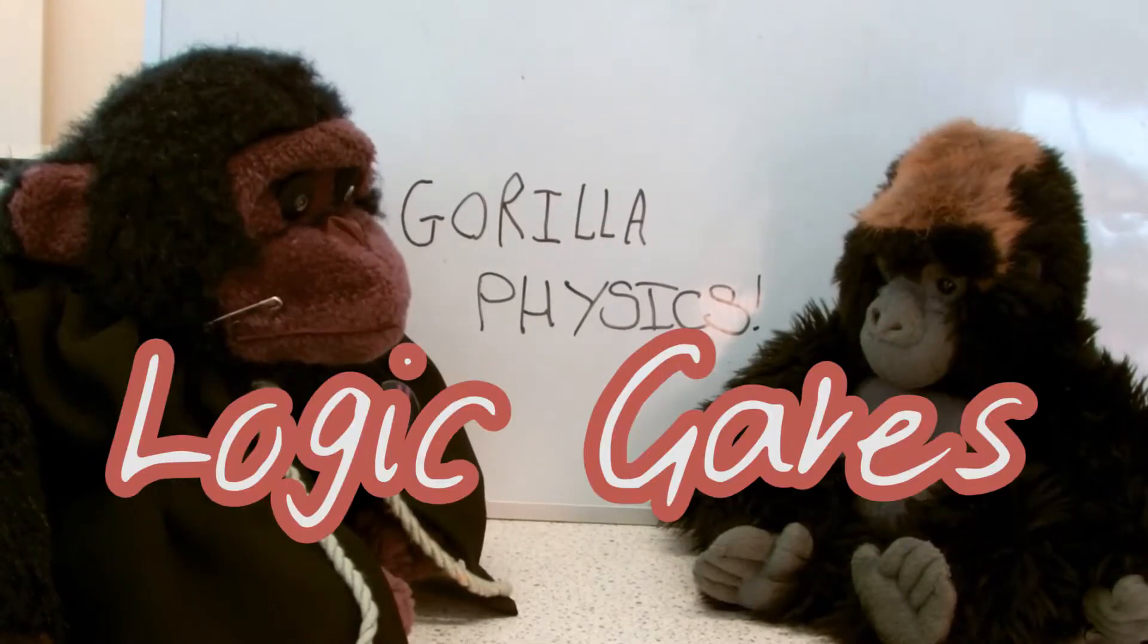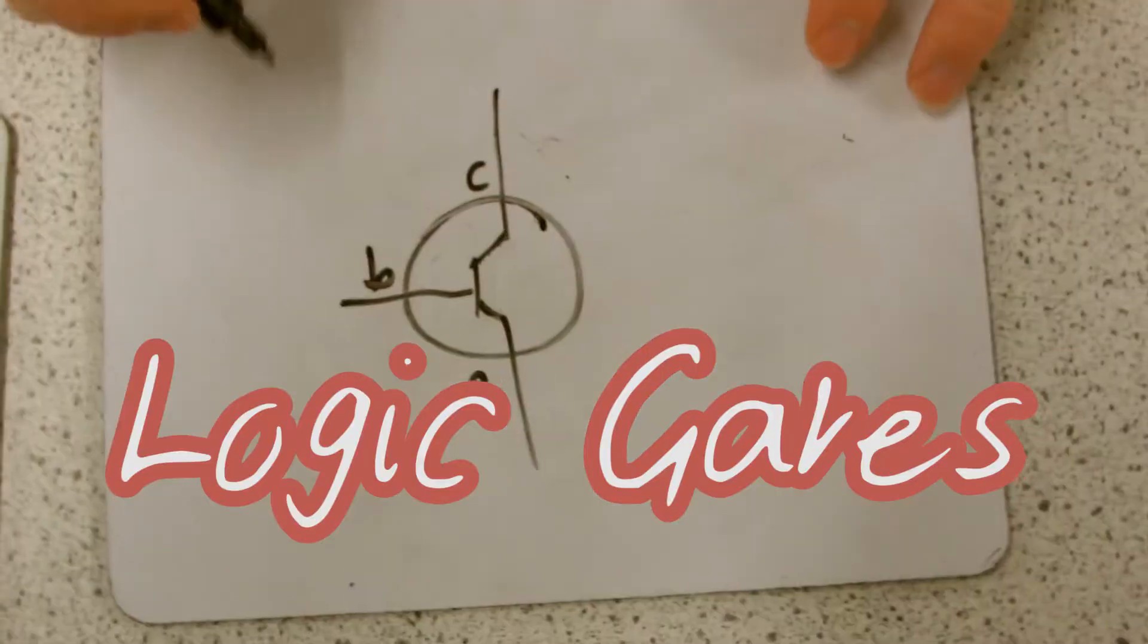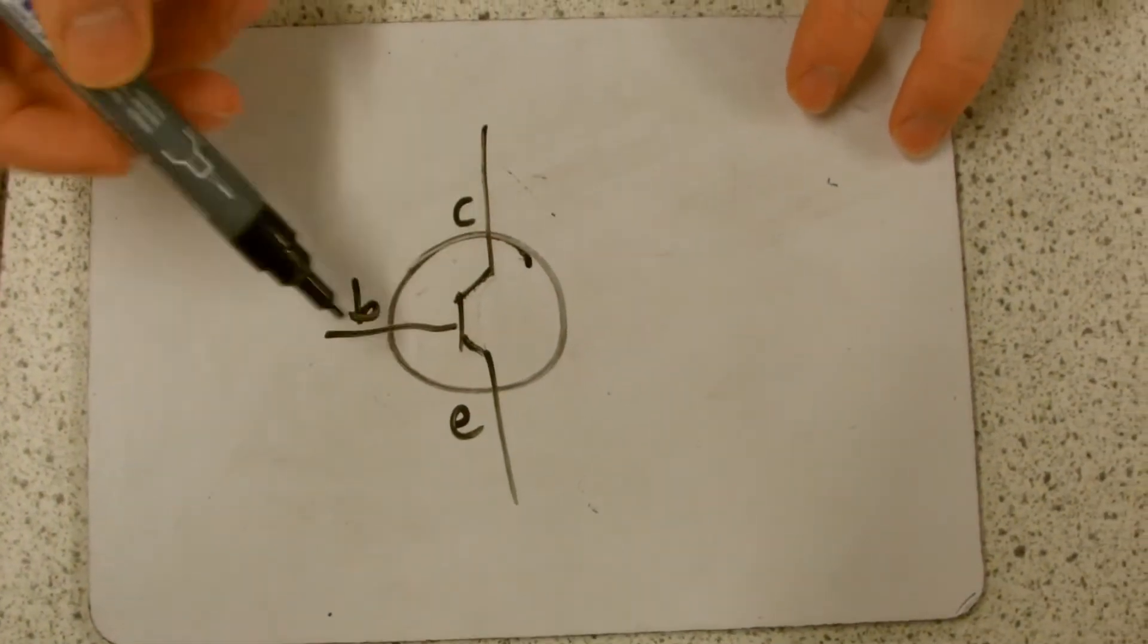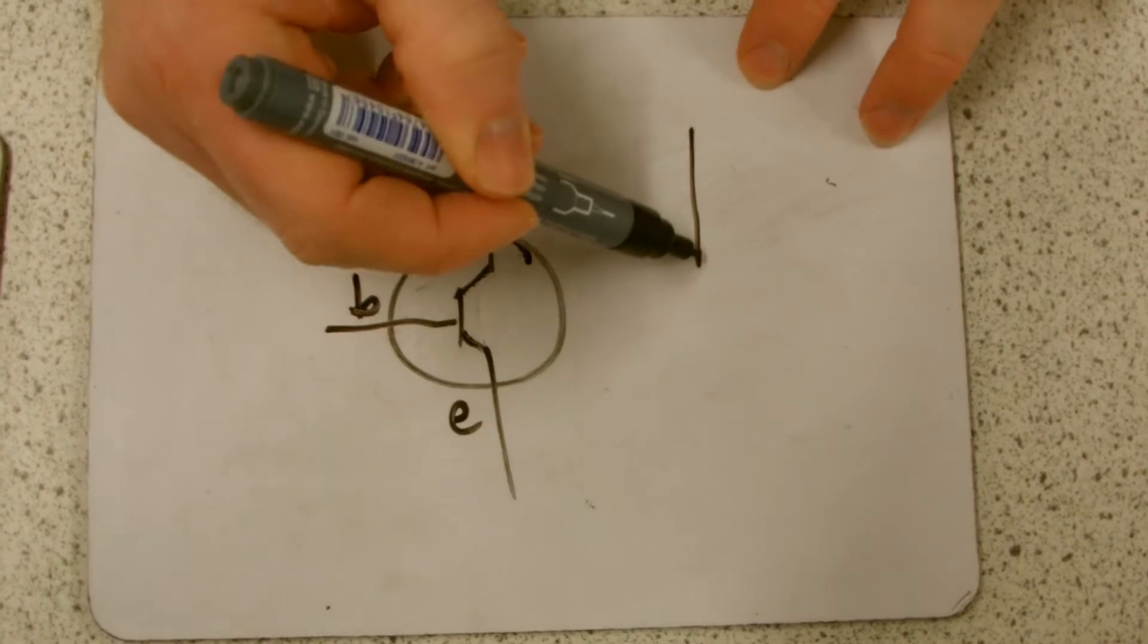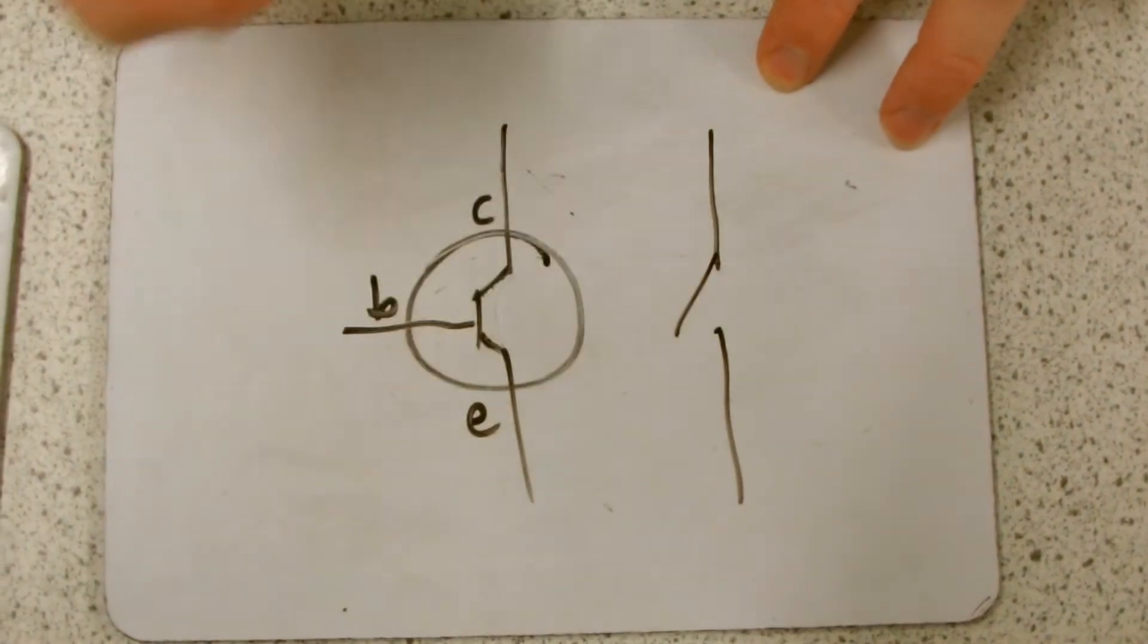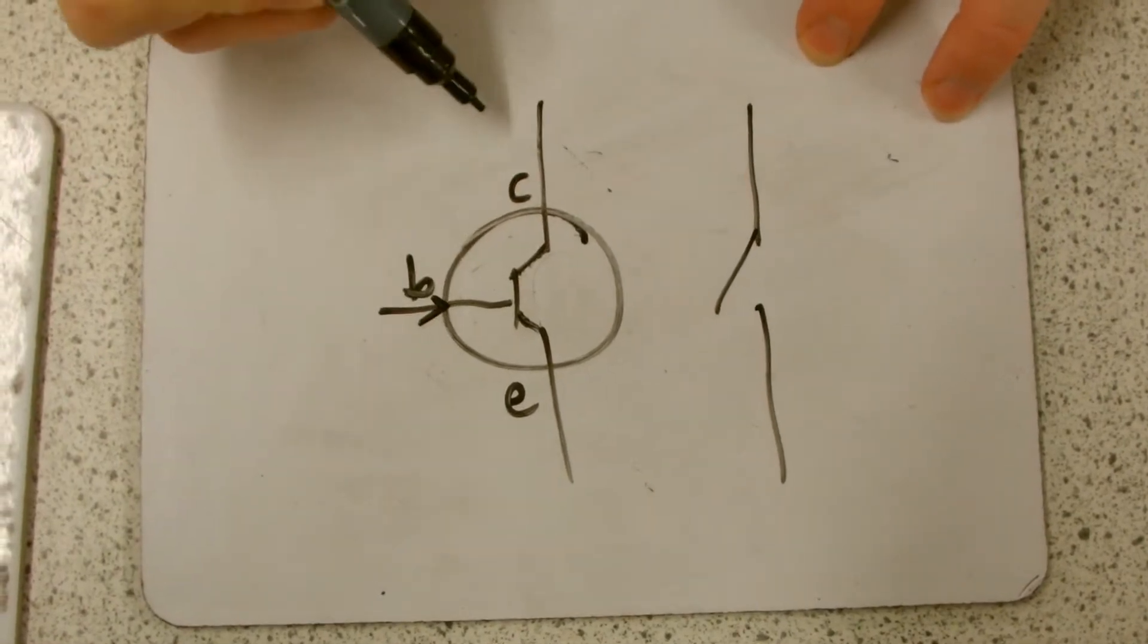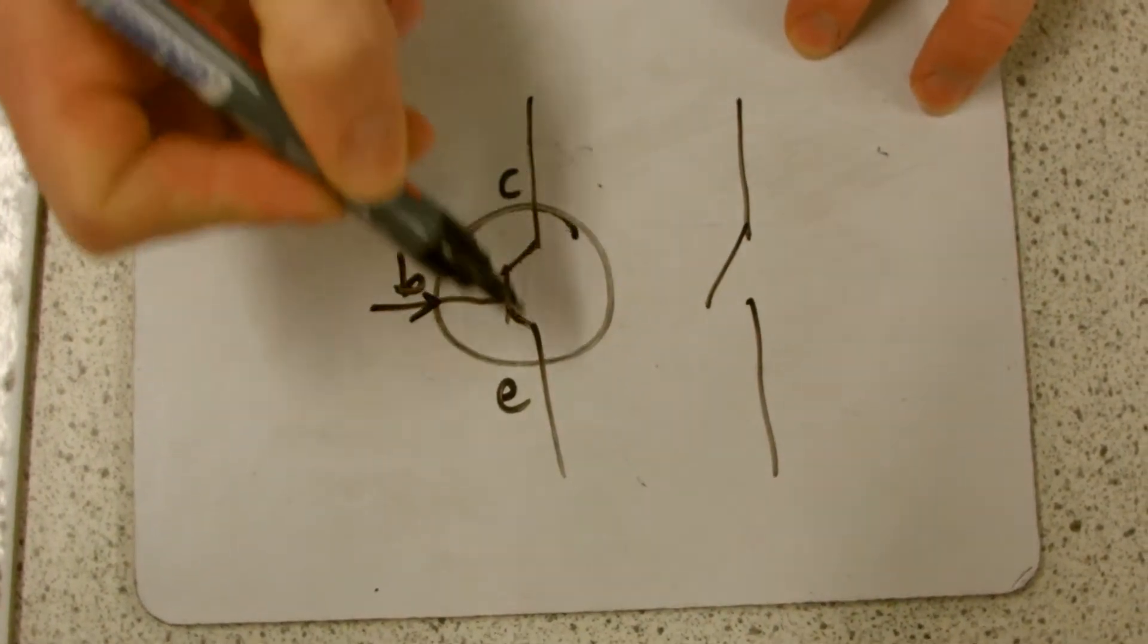Guerrilla Physics! So this is a transistor, it's basically an electrical switch. Instead of being like an ordinary push switch where you can complete the circuit by just pushing it closed, you have to have a small current in here to cause the current to flow from C to E.